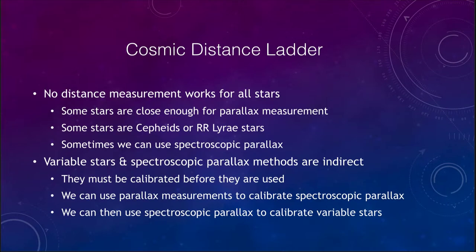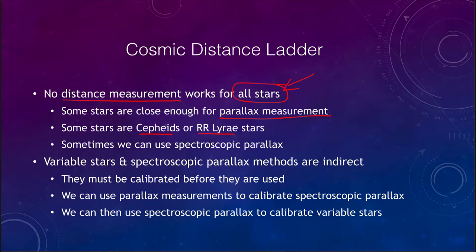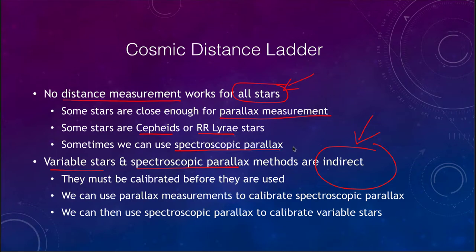This leads us to what we call the cosmic distance ladder — the fact that no single distance measurement method works for all stars because they only work over various ranges. Some stars are close enough that we can measure distances directly through parallax. Some are specific types like Cepheids or RR Lyrae variable stars that have other methods. The variable star and spectroscopic parallax methods are both indirect — they depend on parallax measurements and require stars with measured parallax in order to calibrate them.